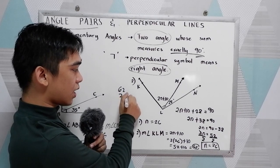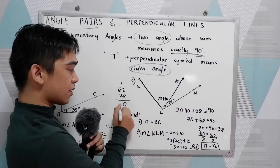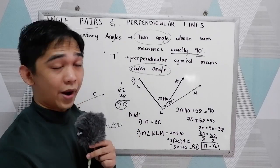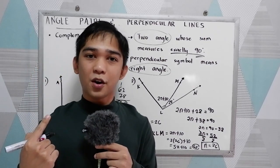So 62 plus 28, so 10 carry 1, 90. Yes, it is equal to 90, therefore your answer is correct. So that's the complementary angle.